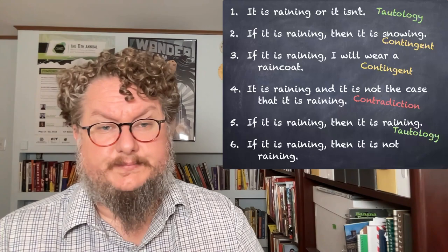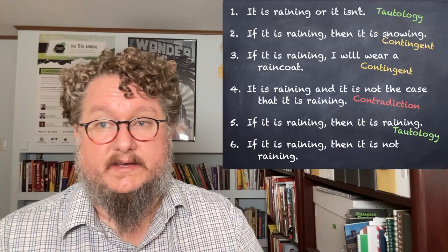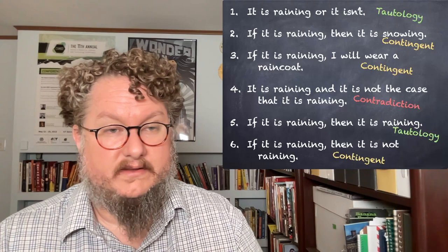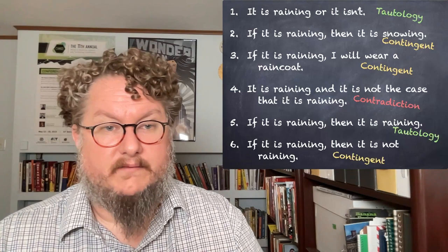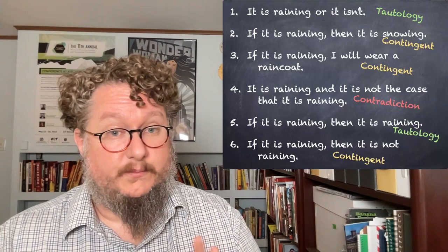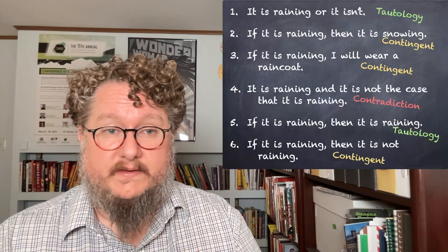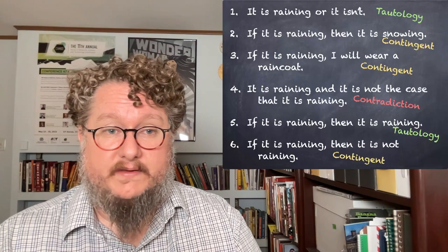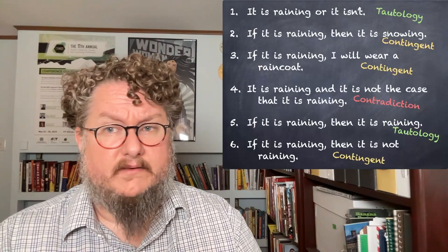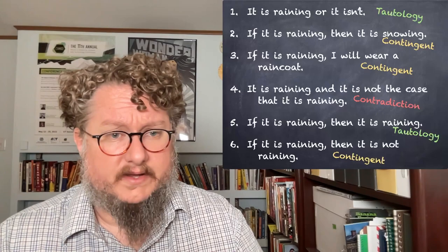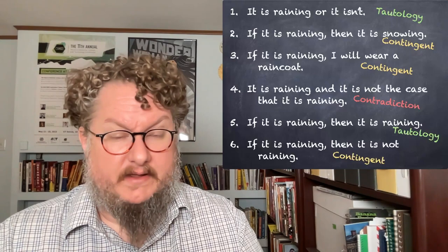Here's a slightly tricky one: 'If it is raining, then it is not raining.' That might seem like a contradiction, but it's actually contingent. This is based on how we interpret 'if-then' sentences. If it happens to be raining right now, the sentence is false. But if it is not raining, the way we interpret the sentence is that the whole sentence is true — so it's contingent. If that doesn't make sense yet, don't worry — we'll get there.